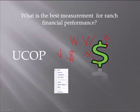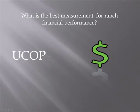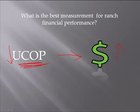We think unit cost of production is probably the highest correlated measurement you can have for estimating profitability of your cow-calf business. As unit cost of production goes down — meaning it costs you less to produce a pound of calf — your profitability goes up. So that is the best estimate for measuring ranch financial performance. If you want to make more money in this business, you need to lower your unit cost of production.